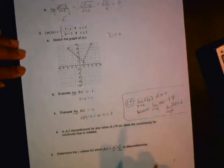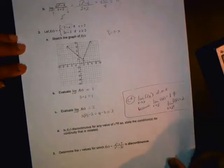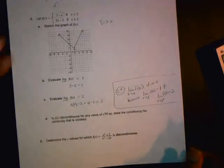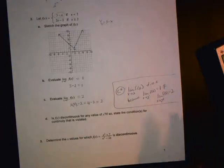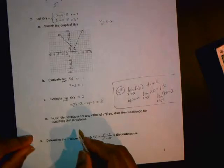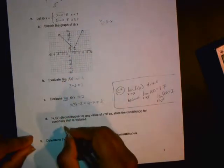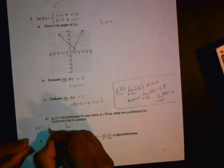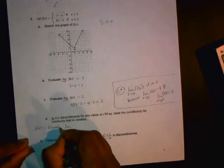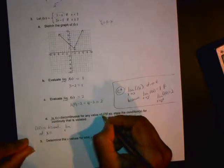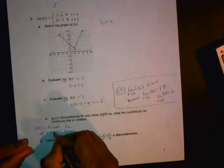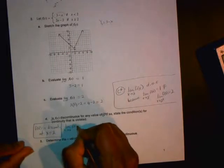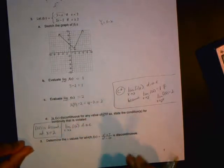This side note will help us in the next part. The next part says, is f of x discontinuous for any value of x? If so, state the condition or conditions for continuity that are violated. And we have three conditions. The function is defined there, that's not violated. It's the second one that's not violated. So you would say f of x is discontinuous at x equals two. Why? Because the limit as x goes to two of the function does not exist.